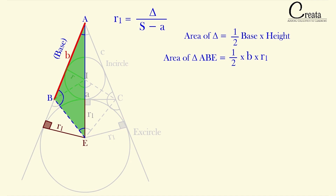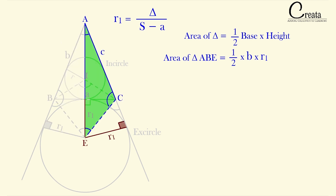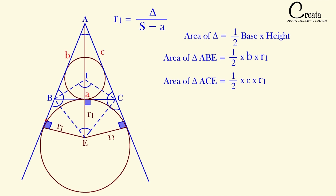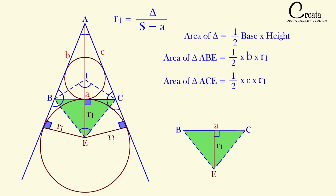In the same way, we can calculate the area of triangle AEC: the area will be equal to half into c into r1, taking c as the base and r1 as the height. Further, the area of triangle BCE is equal to half into a into r1, taking a as the base and r1 as the height.